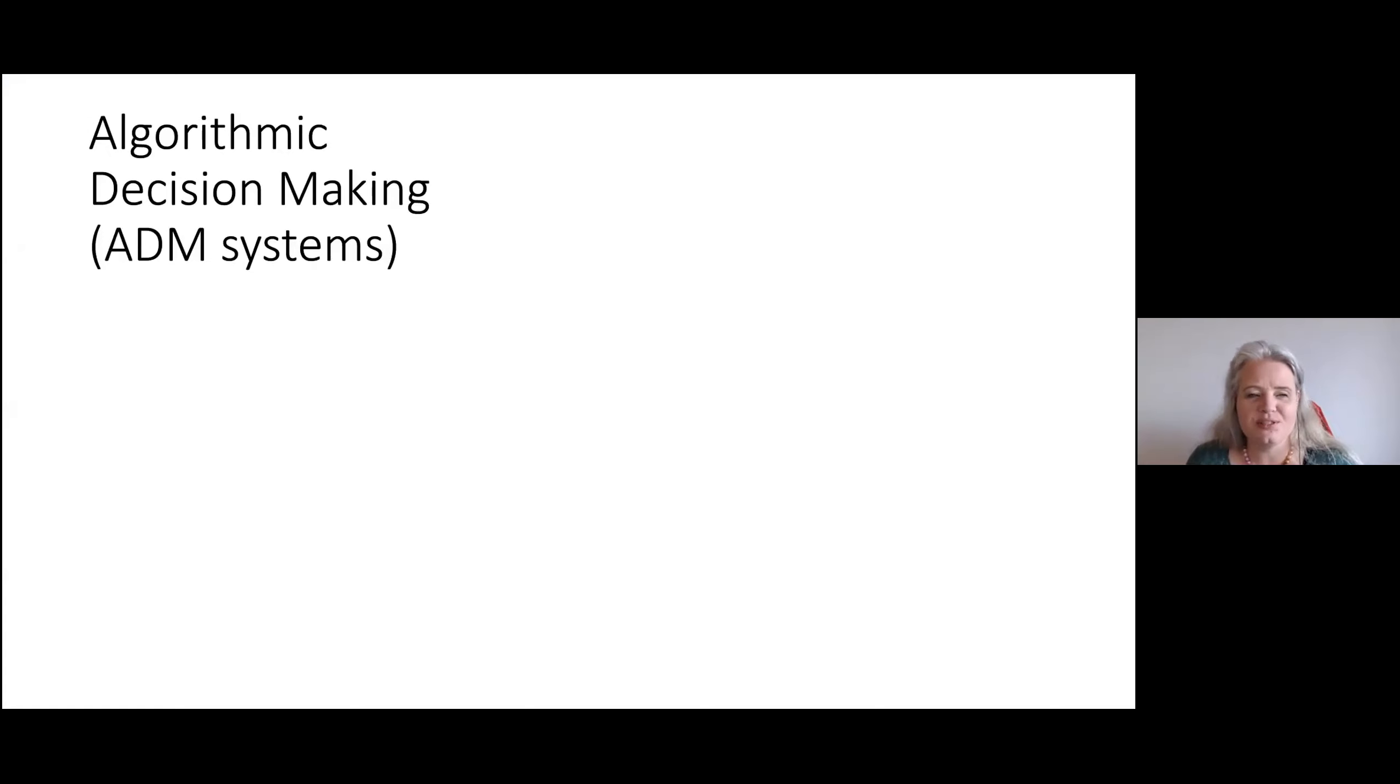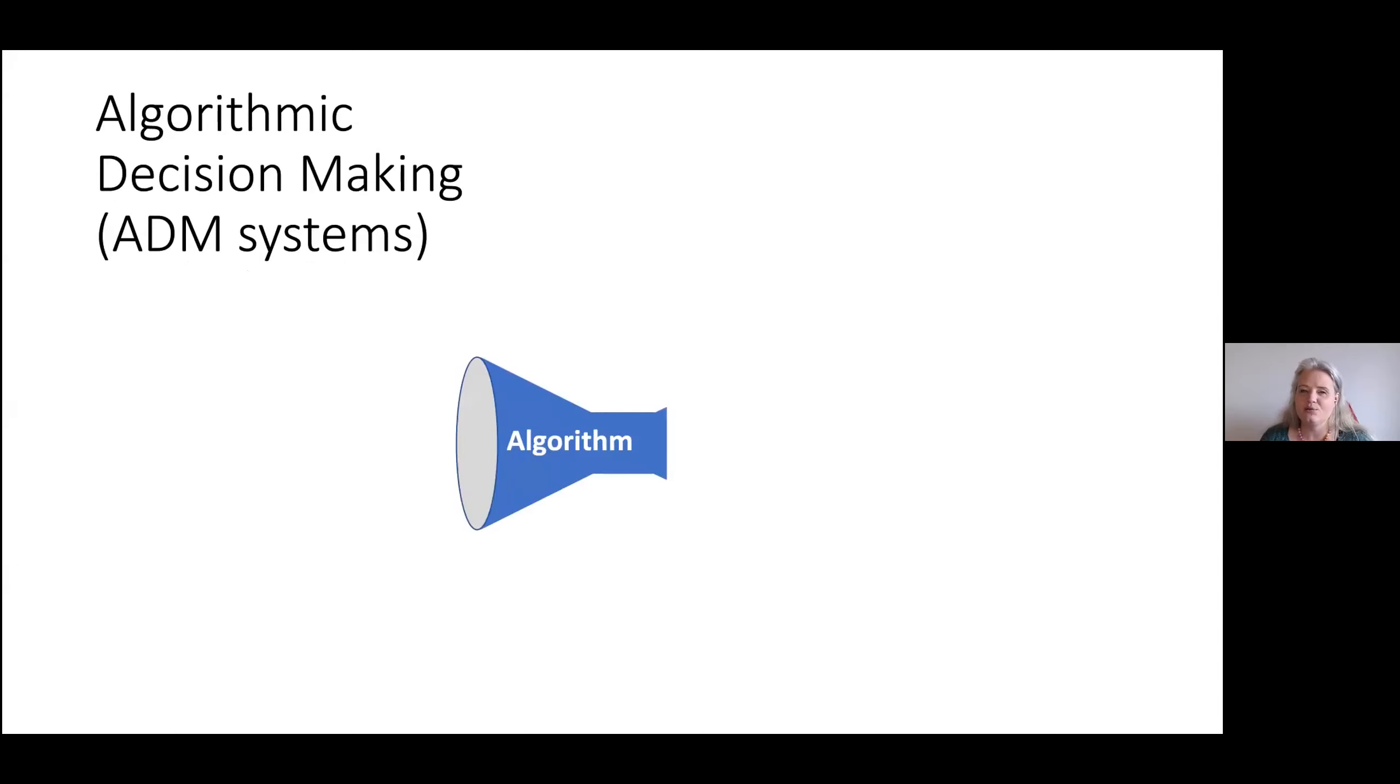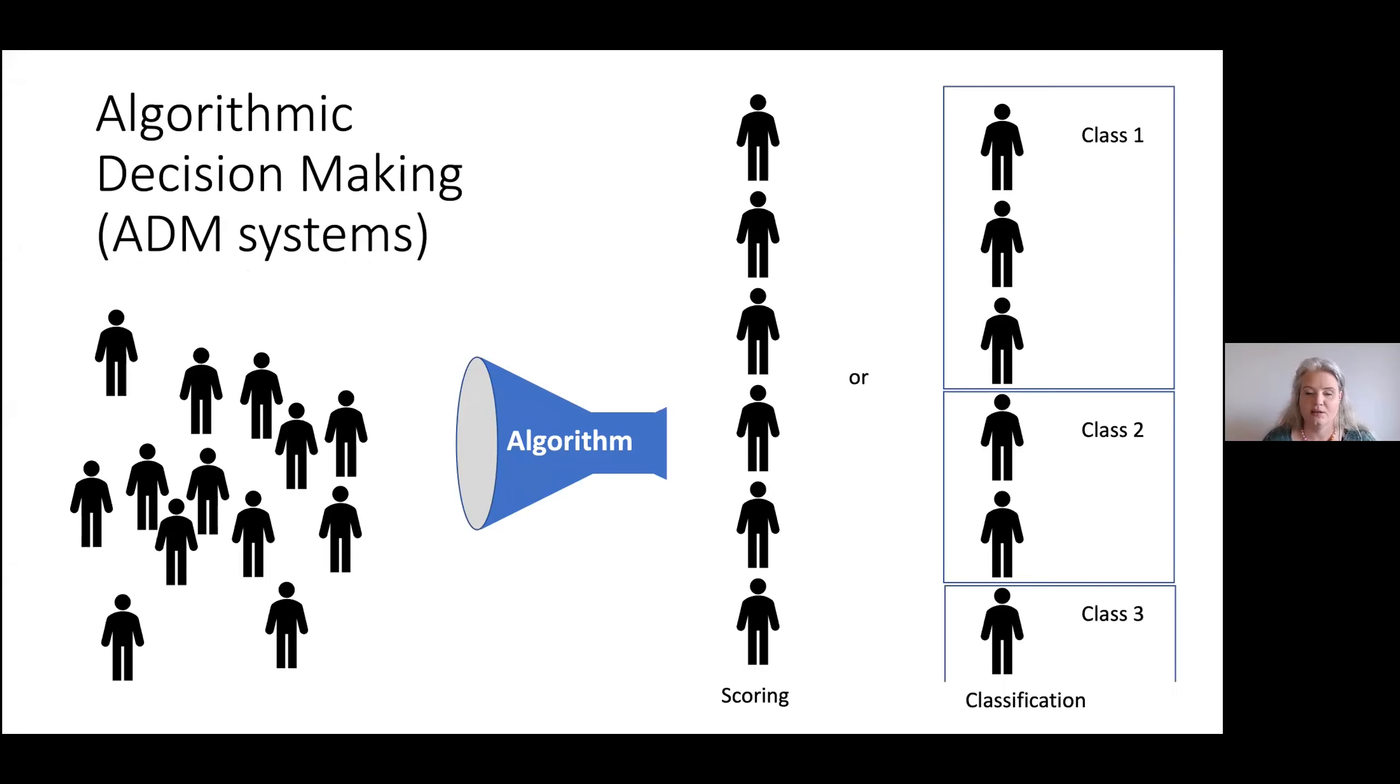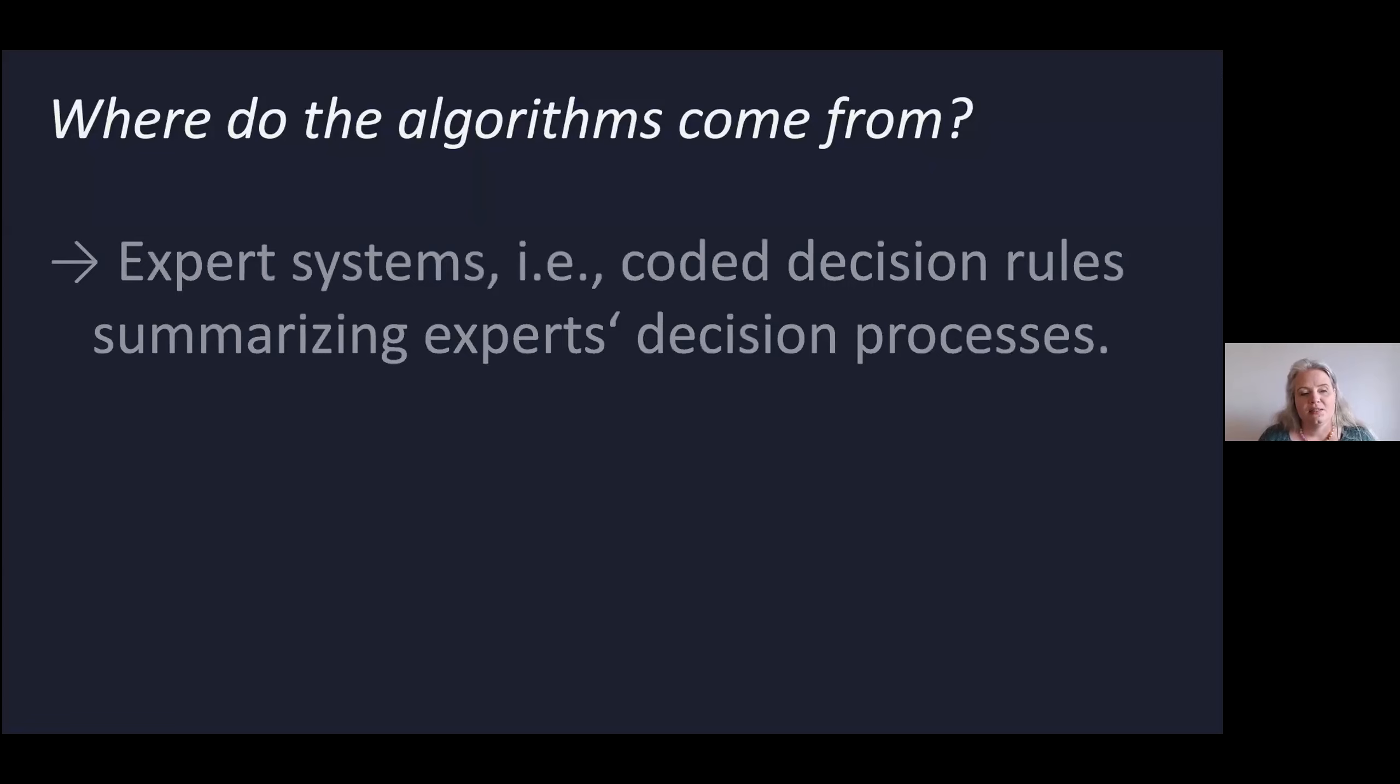So what is an algorithmic decision-making system? I want to keep it very simple. It's an algorithm, and we're interested in those algorithms that take as input a set of people and either score them or categorize them, classify them into classes. So the question is where does the algorithm come from? On one hand, we have expert systems, a technology from the 80s and 90s. That means you have coded decision rules summarizing experts' decision processes.